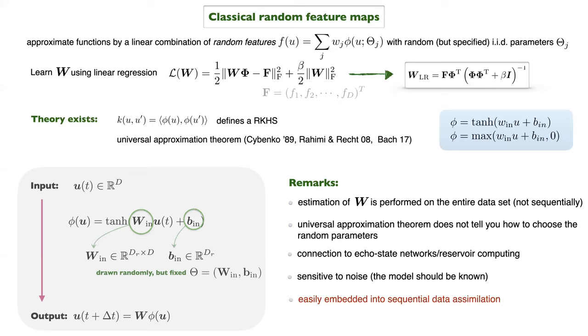A drawback of random feature models is sensitivity to noise — people typically use them when the model is known and perfect data is available. However, the positive aspect we exploit is that random features embed very easily into a data assimilation framework.